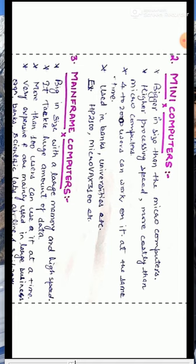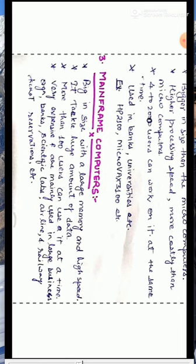The next type of computers is mainframe computers. Mainframe computers are very powerful, big in size, with large memory and high speed. They are designed to tackle huge amounts of data, and more than 100 users can use a mainframe computer at a time. These computers are very expensive and are mainly used in large businesses, organizations, banks, scientific labs, airline and railway ticket reservations, etc.